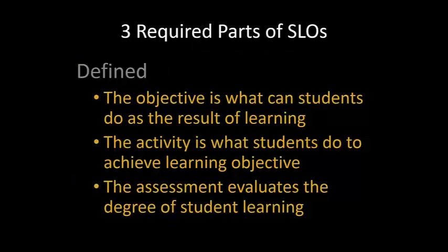How do we define these three parts? Well, first of all, the objective is what students can do as a result of learning. The second component is the activity — this is what students do to practice or to eventually achieve the learning objective. And finally, the third required part is the assessment, which evaluates whether students are successful in learning what you want them to learn.